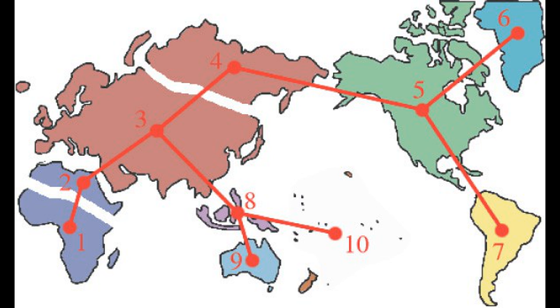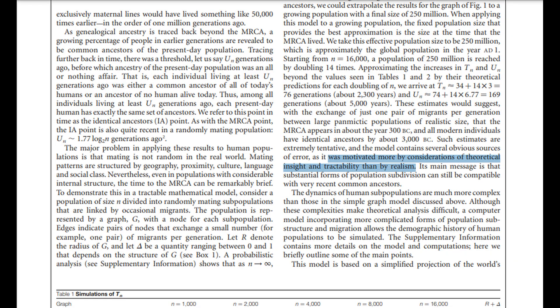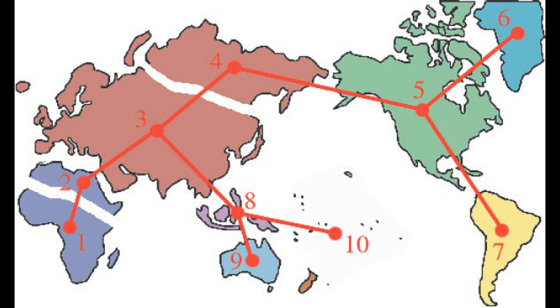That later paper by Chang et al., modeling the recent common ancestry of all living humans, does attempt to make a slightly more realistic model of human common ancestry. Under that model, one migration event is allowed between populations per generation. From there, the researchers calculate that the most recent common ancestor of all living humans lived around the year 300 BC. The researchers acknowledge the calculation was motivated more by theoretical insight and tractability than by realism. An interesting result of the study was that the most recent common ancestor would probably have lived in eastern Asia, likely due to its proximity to Eurasia, the Americas, and the Pacific Islands, allowing descendants to reach many locations rather quickly.